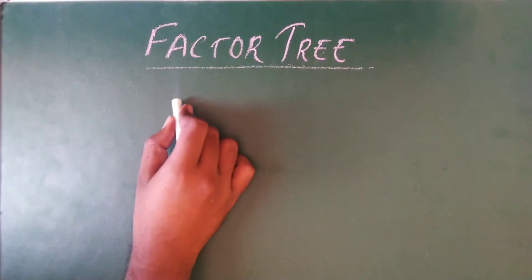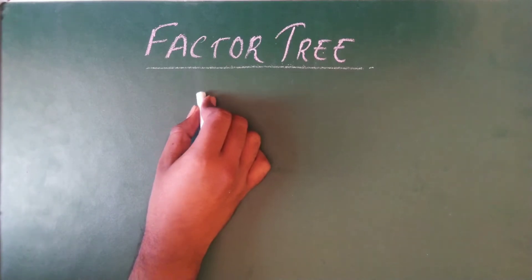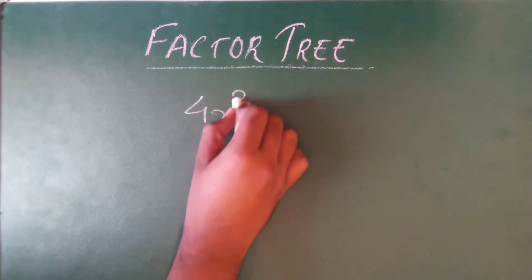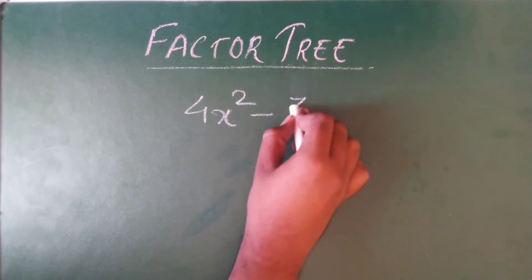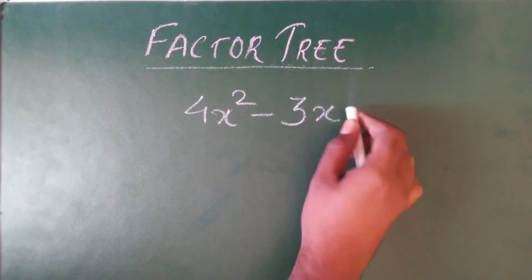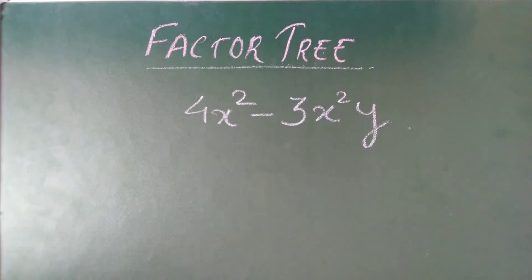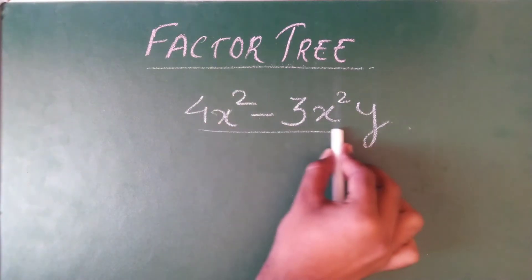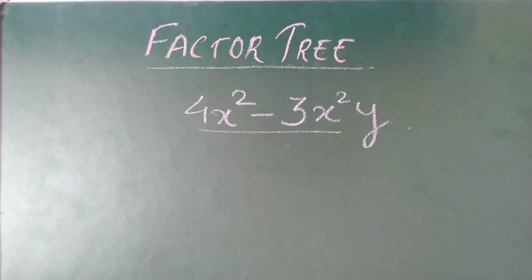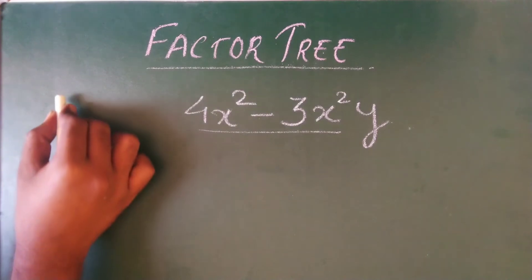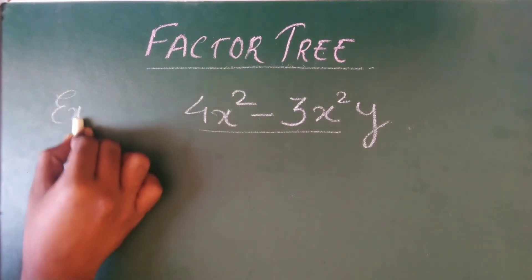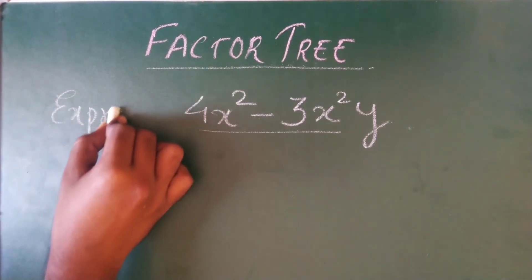Let us take one example: suppose I take 4x² minus 3x²y. This is the example. Now you have to draw the factor tree of this given algebraic expression. First, whenever this is given, you write the expression whatever it is.